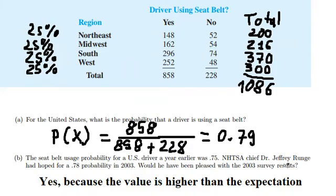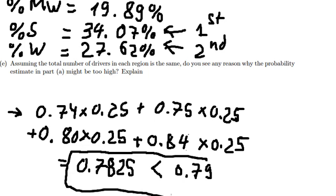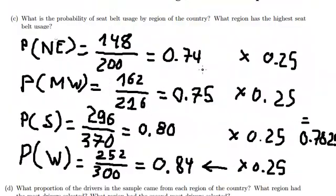So on the first one, we got 0.79. So we need to explain why the probability in part A might be too high. And here is about the result in here. So the reason why we got this number is higher than this number in here, because that is about the probability for each region. They are not the same.